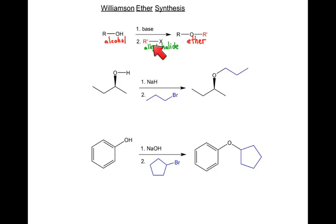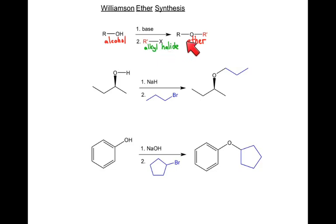The second part of this reaction is really an SN2 reaction. So primary and secondary alkyl halides are what are going to work best to run this reaction. We have two examples here that we're going to look at.